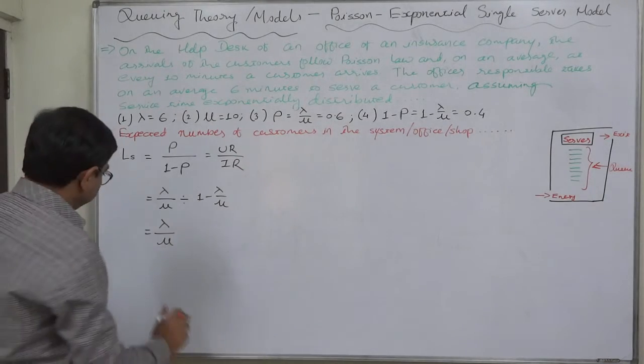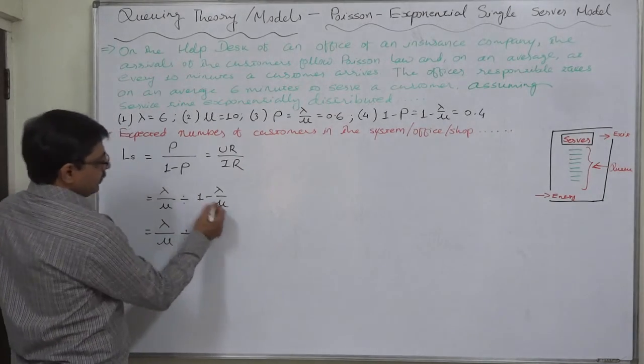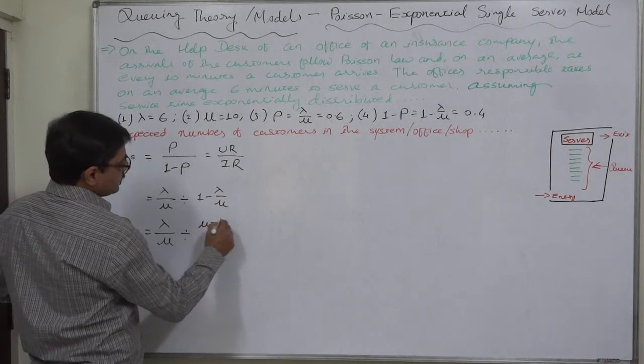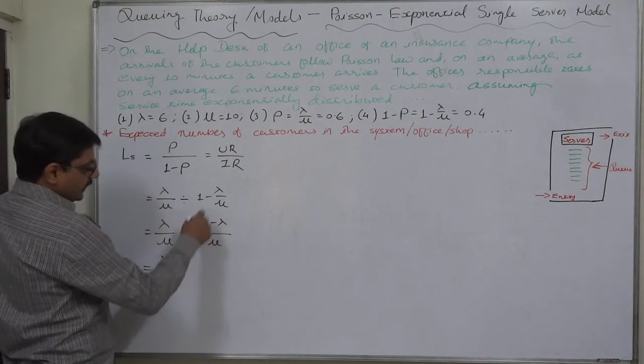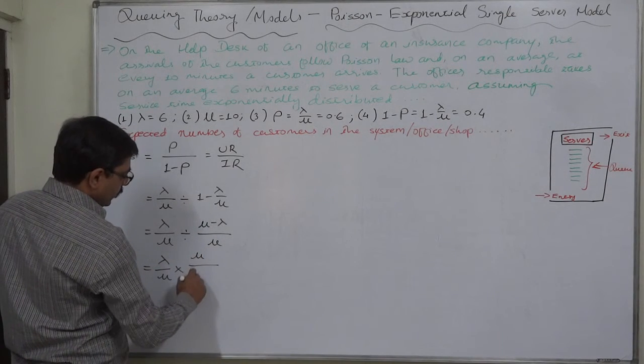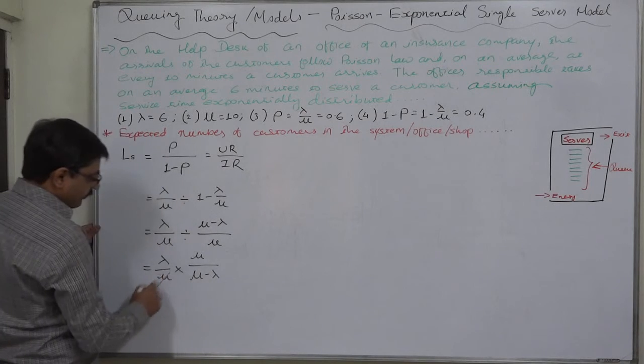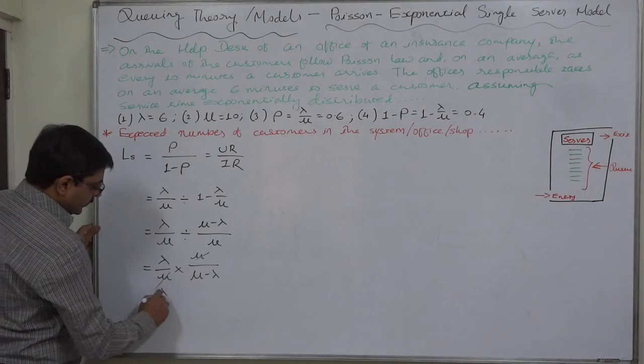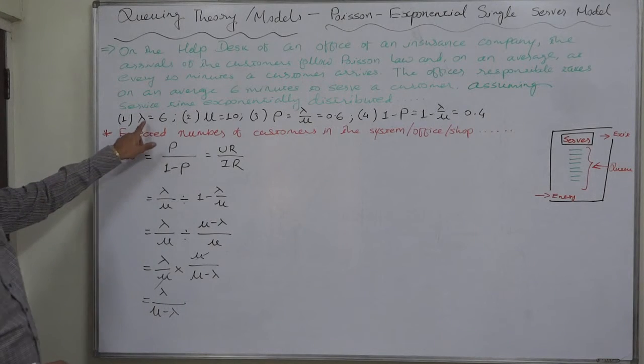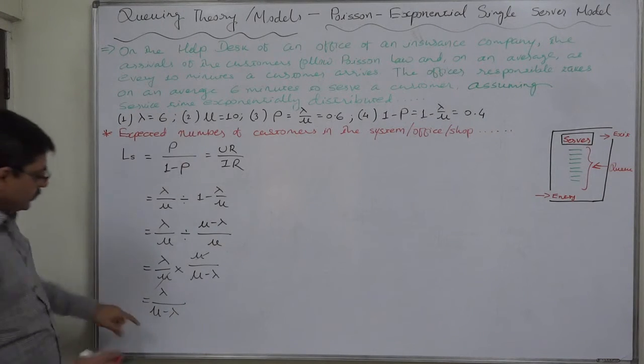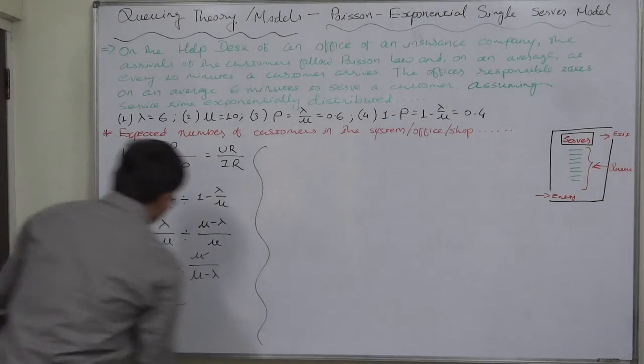Divided by mu into 1, mu minus lambda upon mu. That will be lambda upon mu times the inverse of this, mu upon mu minus lambda. Now we can cancel these two, so ultimately the formula in which we can directly substitute the values of lambda and mu is with us.